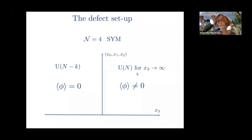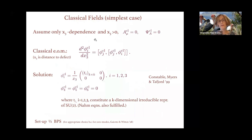The setup is such that for finite x3, the gauge symmetry is also U(N-k) so that the symmetries match at the defect. These classical fields depend on x3 in such a way that they decay to zero far away from the defect and then diverge at the defect.